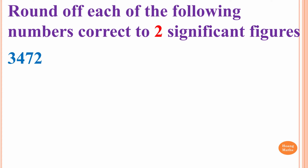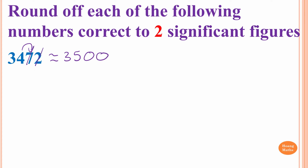First one: 3,472. These are all non-zero digits, so all these numbers are significant. We count how many significant figures: 1, 2, 3, 4 — so we have 4 significant figures. We only want 2, so we look at digits 1 and 2, which gives us 34. We check the number after 4, which is 7 — greater than 5, so it rounds up to 35. The trailing digits become 0, so 3,472 equals 3,500. That is 2 significant figures, because zeros at the end of a whole number are not significant.